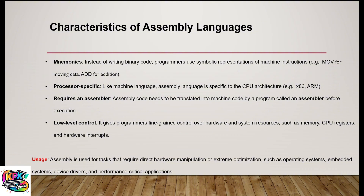Characteristics of assembly language: First, instead of writing binary code, programmers use symbolic representations of machine instructions — for example, MOVE for moving data and ADD for addition. Second, it is processor-specific — just like machine language, assembly language is specific to a CPU architecture and cannot be used for a different architecture.